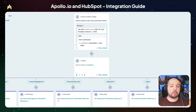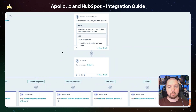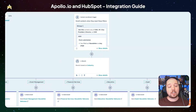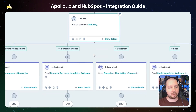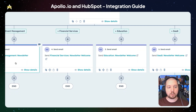We can also use that enriched information within automation in HubSpot. Here we've got a workflow that enrolls people when they meet a certain job title match and they've filled out a form submission for our newsletter. We are actually sending separate newsletters out to different industries. We can see we're using the Apollo job title information in the enrollment criteria, branching on the Apollo industry information, and then sending a unique and personalized email for these different industries.